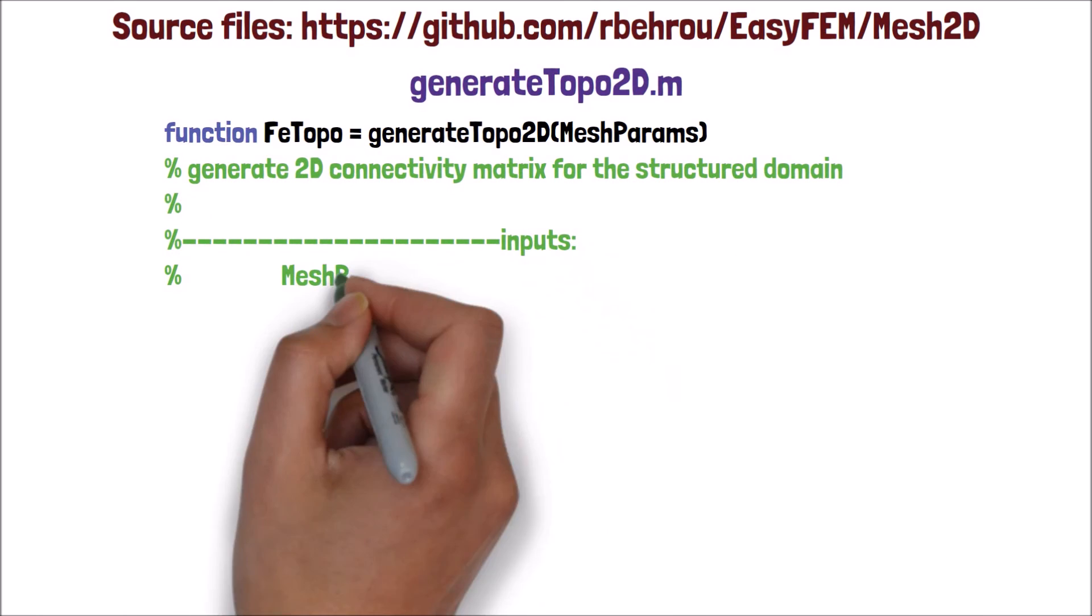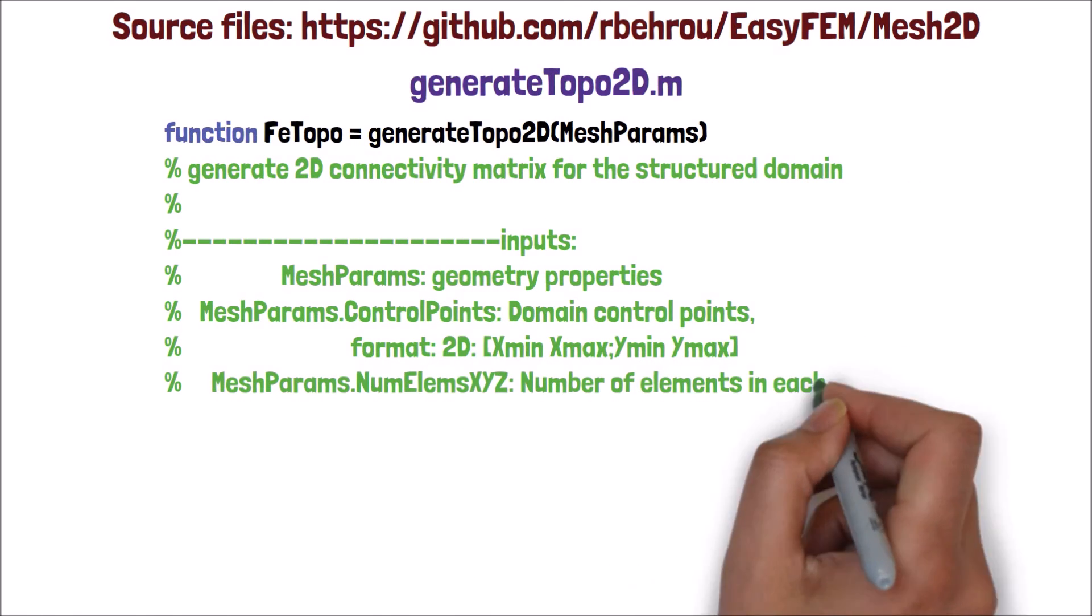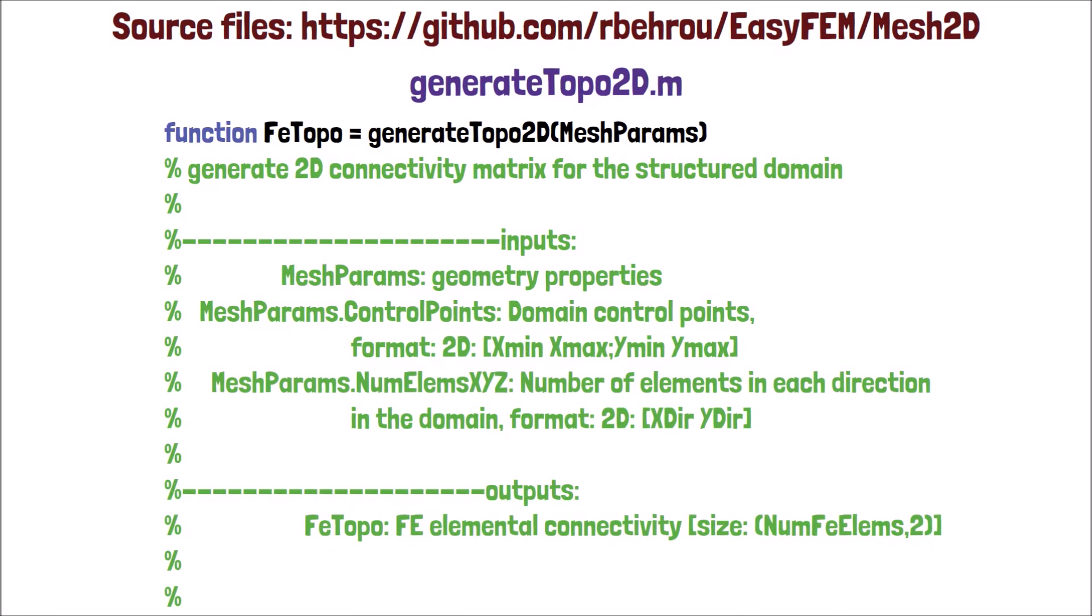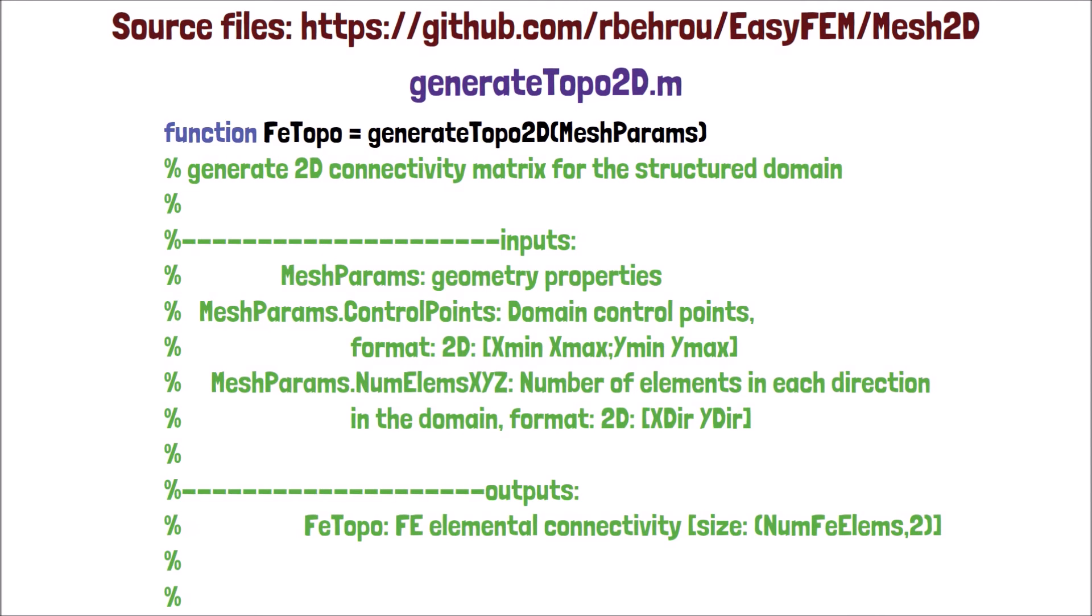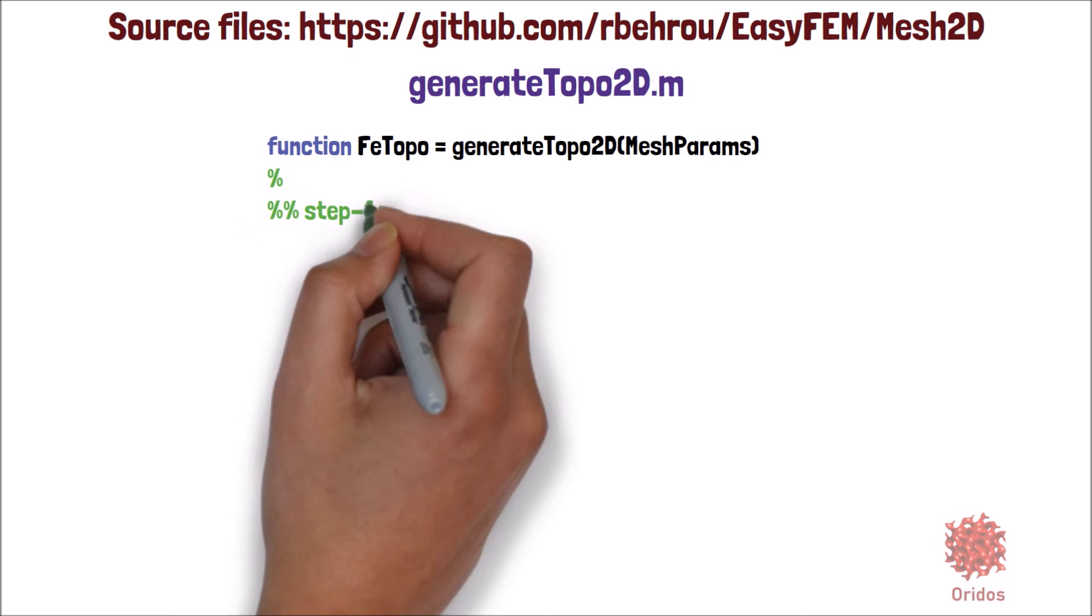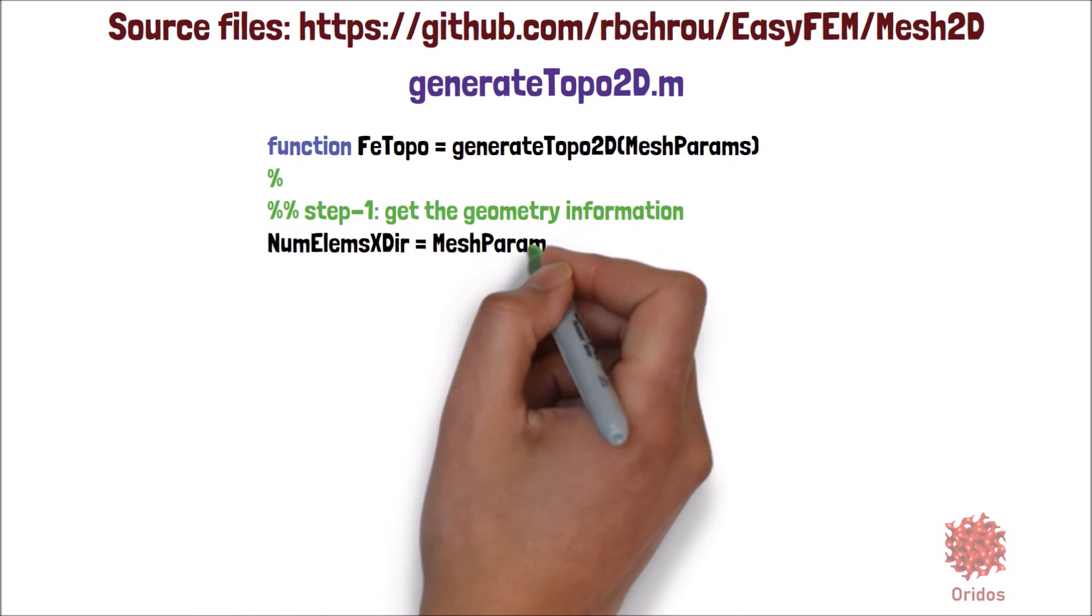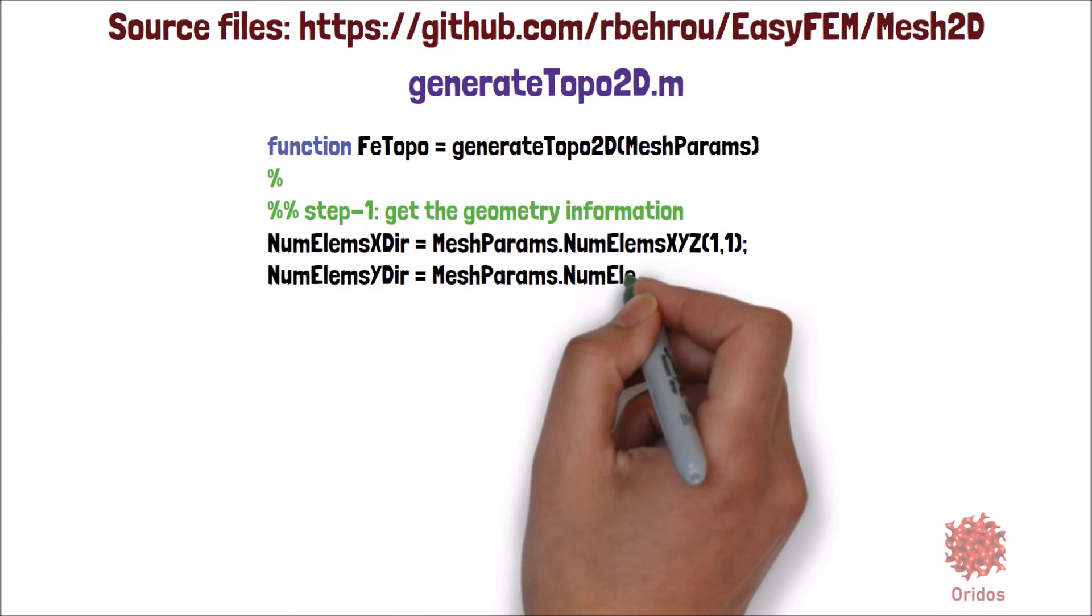Similarly, here is additional information about the input and output arguments in the generateTOPO2d function. Inside of this function, step one is to get the geometry information, such as the number of elements in each direction.